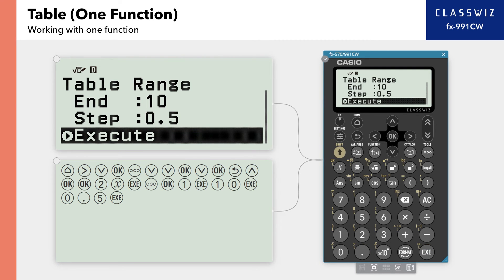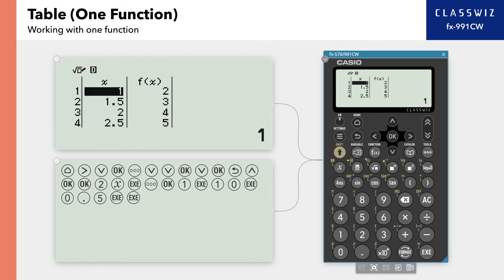Finally, confirm that the cursor is on Execute and press Execute to see values on the table. As you can see, the table shows the values of Fx corresponding to X.